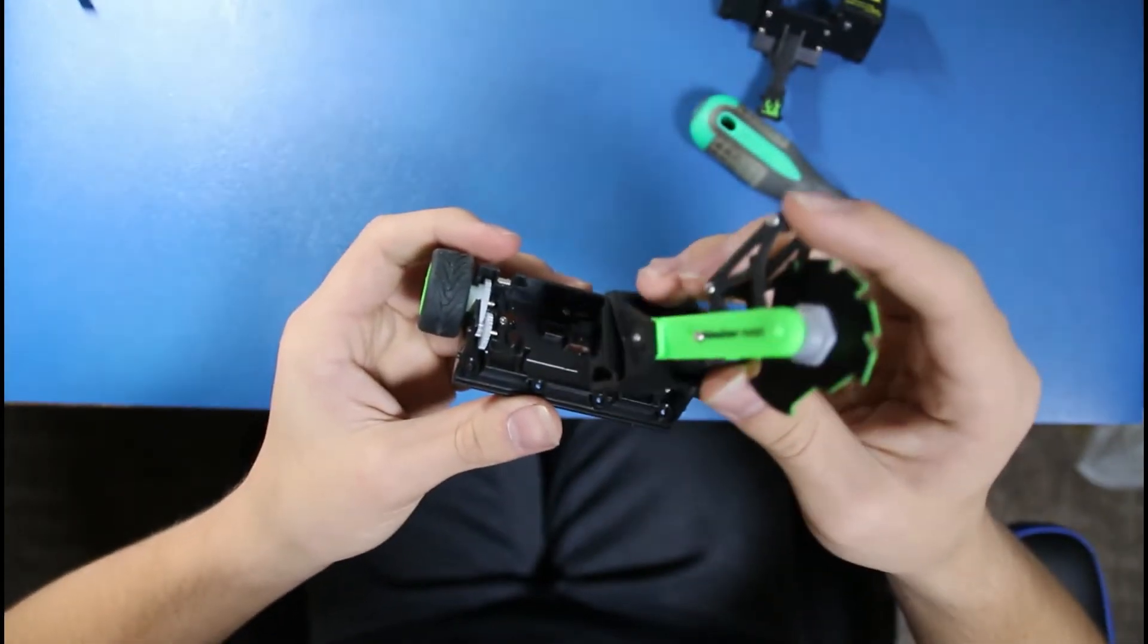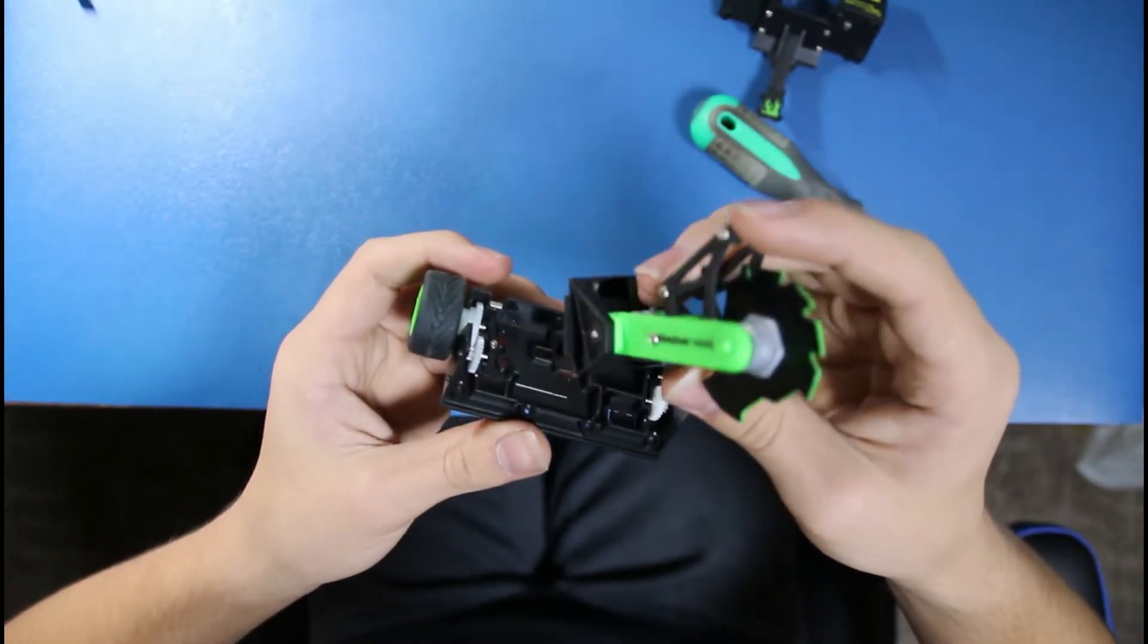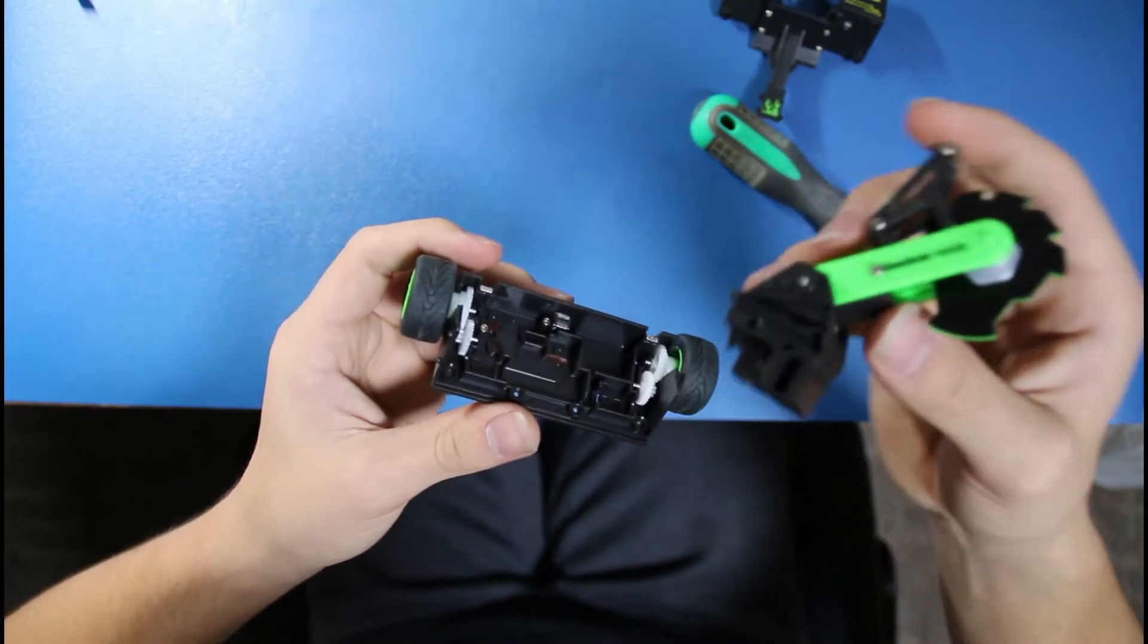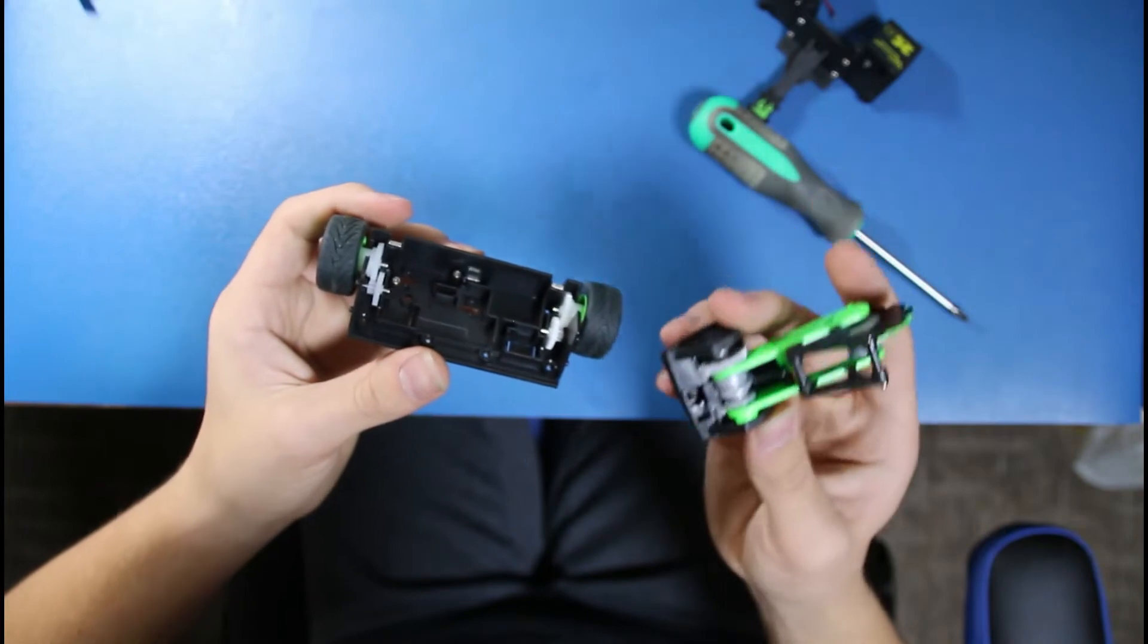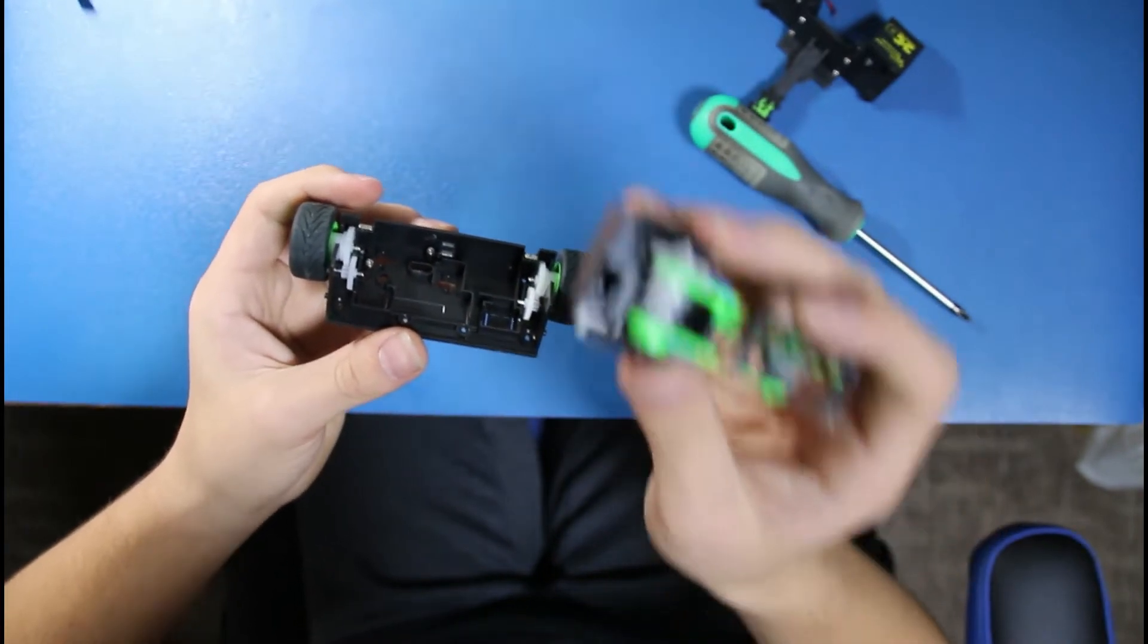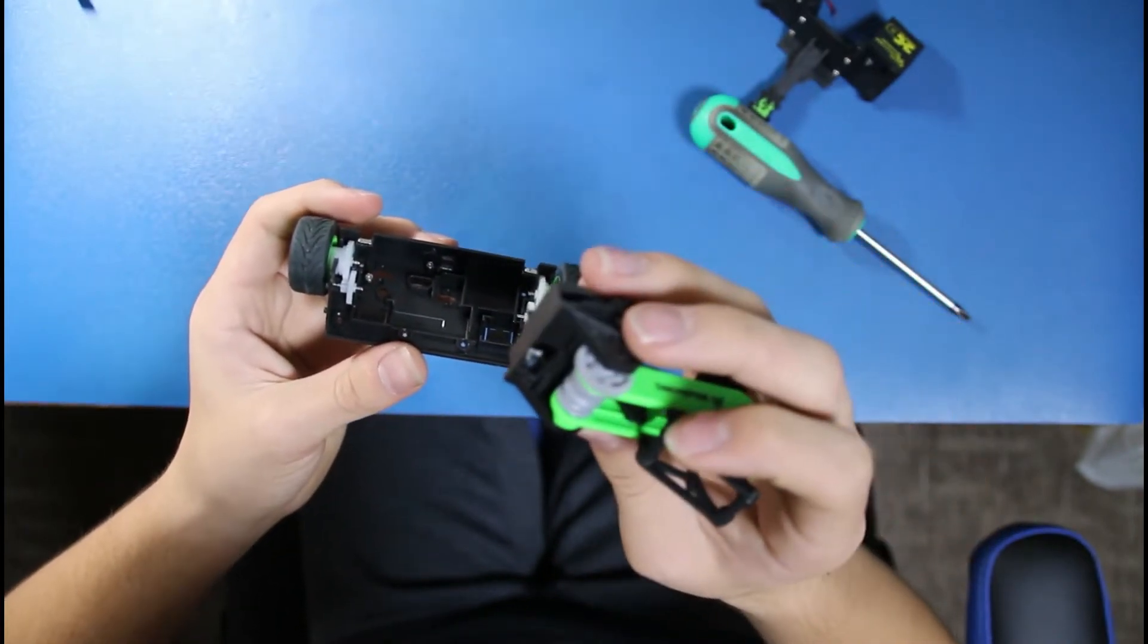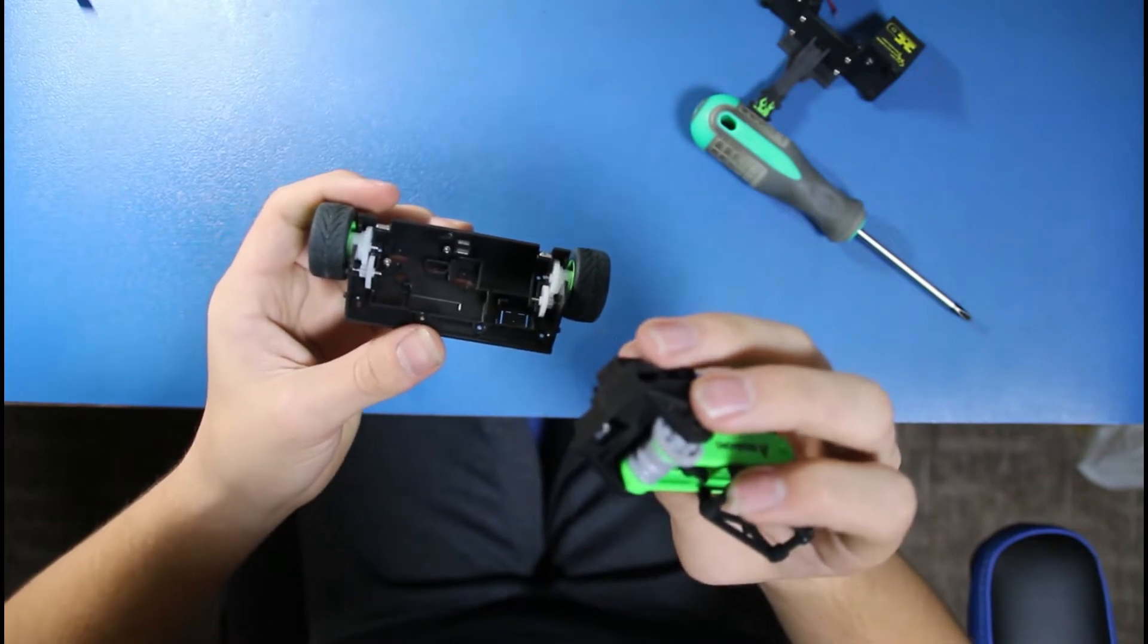You would have to take apart the weapon assembly, take the belts, take the weapon motor, and take the receiver out of here, which I have done. You just cut it out. It's pretty simple.